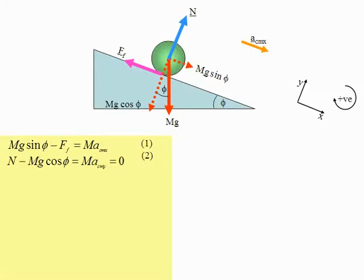Now we need to consider the rotational equation of motion. Remember that Newton's second law for rotation is that the resultant external torque, tau_ext, is equal to the moment of inertia times the angular acceleration alpha. The only force which produces a torque on the sphere is the frictional force f_f, because all the other forces act through the center of motion — through the axis of rotation. Therefore, the torque produced by the frictional force equals the magnitude of the frictional force times its distance from the axis of rotation, which is just the radius R. That gives us equation 3.